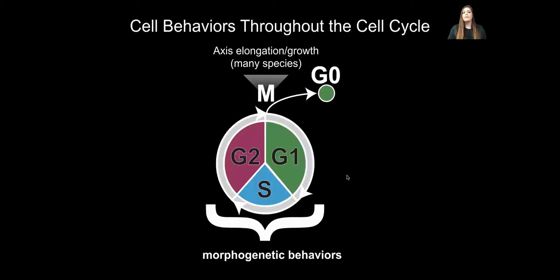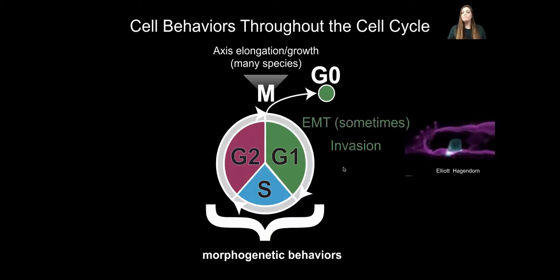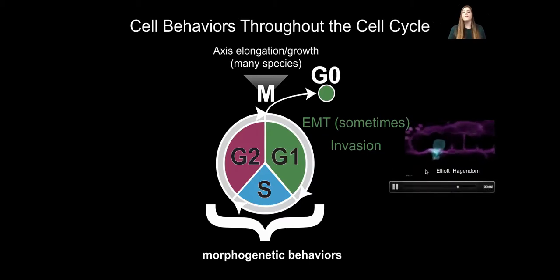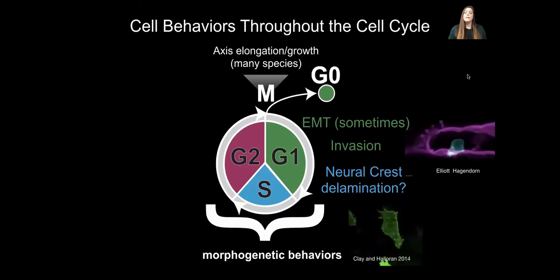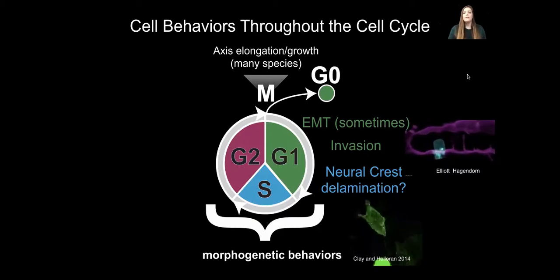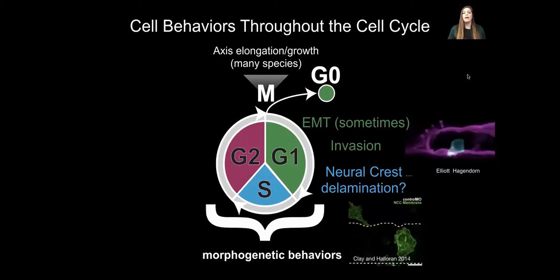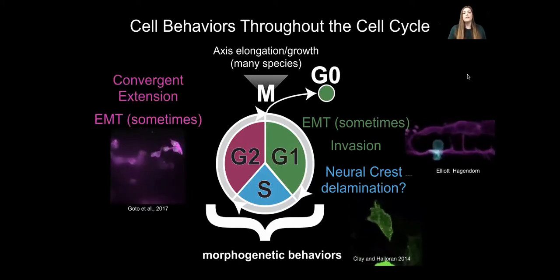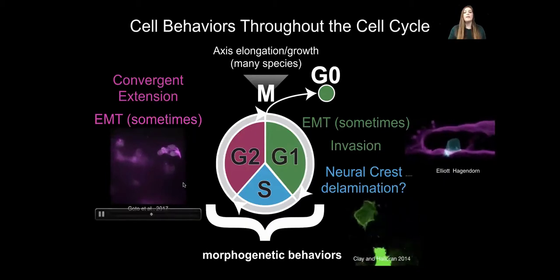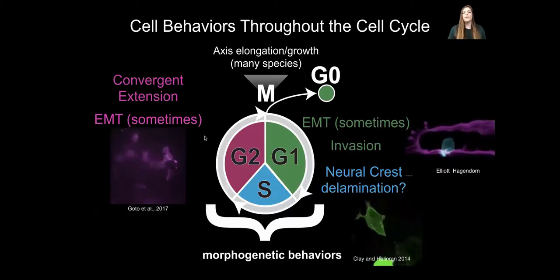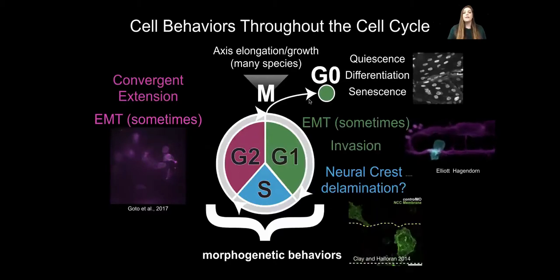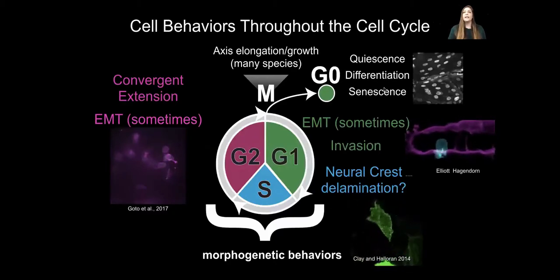To give some examples of different cell cycle-regulated behaviors: in the Mattis lab we're interested in this particular cell in C. elegans, denoted here in cyan, which must be held in G1/G0 in order to invade through the underlying basement membrane shown in magenta. Neural crest delamination has been debated regarding cell cycle state, but these cells can delaminate and migrate in S phase. Epithelial to mesenchymal transition in the developing tail bud of the zebrafish has been shown to occur in G2, and cells that exit the cell cycle go into G0 as quiescent, differentiated, or senescent.